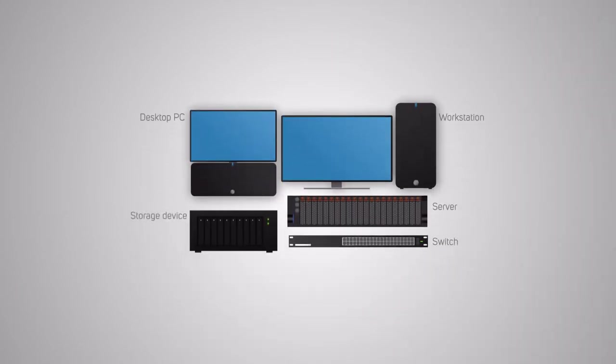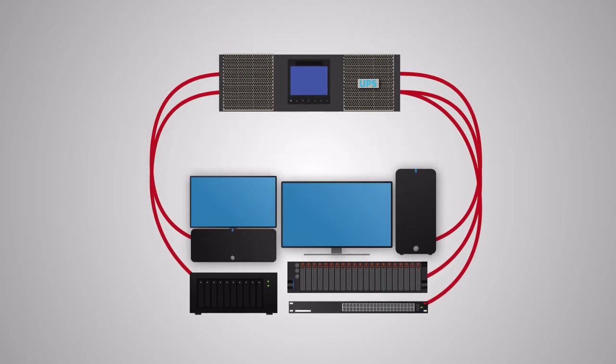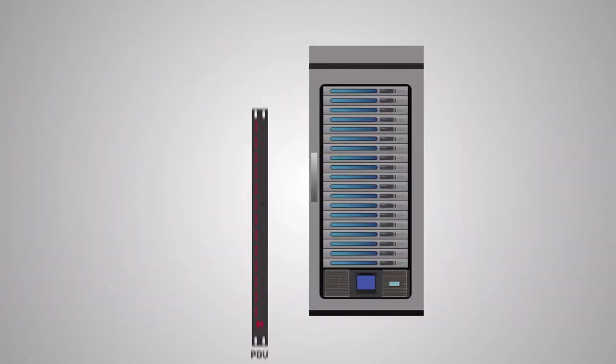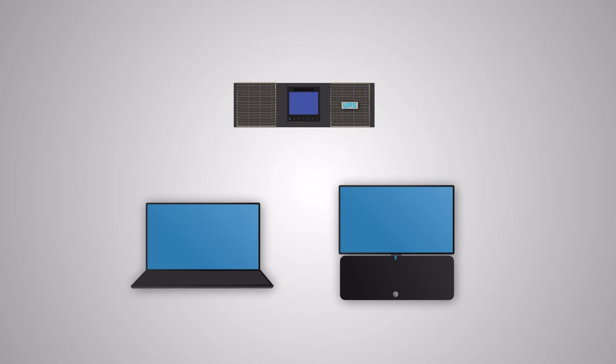Every desktop PC, workstation, server, switch and storage device in your workplace should be connected to a UPS. For the server room, this is usually done via a power distribution unit, or PDU, that fits in the rack being connected to each device. The PDU then connects to the UPS. Individual PCs and laptop power supplies should also be connected to UPS units too, although they don't necessarily need the protection that server infrastructure does — it's still good practice.